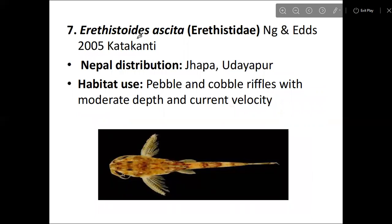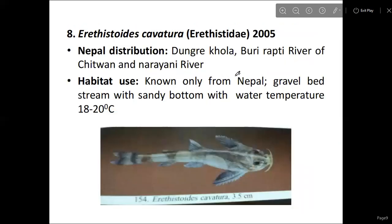The next species is Erethistoides aceta, from the Erethistidae family. In 2005, L.I. Kattakati described and named this species. It is found in Nepal in water streams with moderate current velocity. It is known only from rivers of Chitwan. The habitat is a gravel bed stream with sandy bottom, and water temperature is approximately 18 to 20 degrees Celsius.